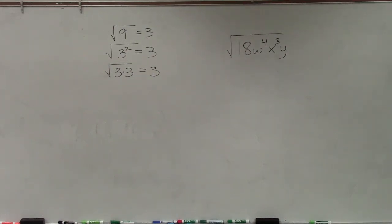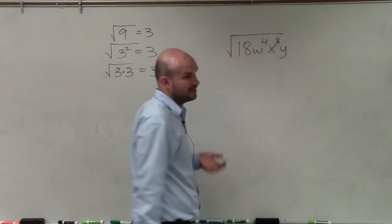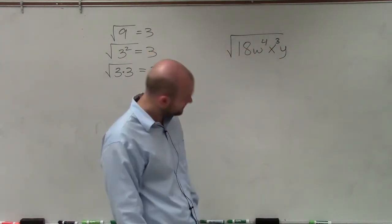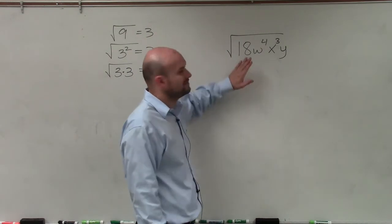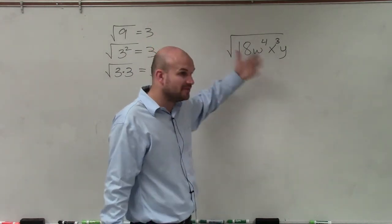So in this problem we have 18w to the 4th x cubed y. What we want to do is we still need to apply prime factorization. So what we're going to do is we have a number and we have variables, but still the same thing applies.